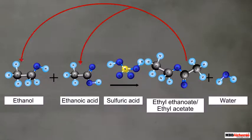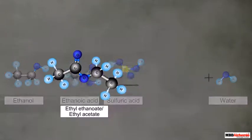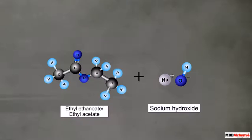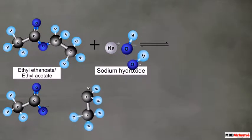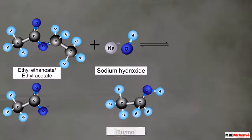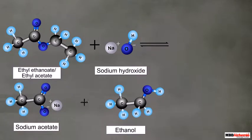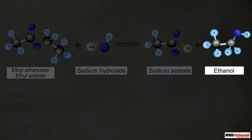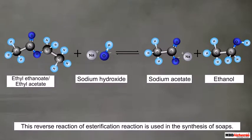Interestingly, we can convert the ester back to alcohol and acid. This can be done by adding an alkali, sodium hydroxide, to the ester ethyl ethanoate. Sodium hydroxide reacts with ethyl ethanoate forming sodium acetate, that is the sodium salt of ethanoic acid, and ethanol.